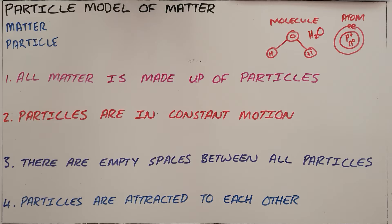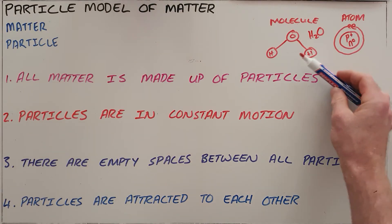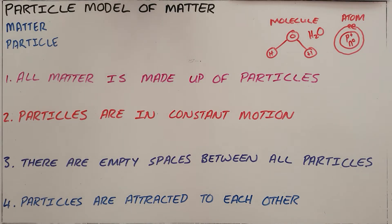So what the particle model of matter does is tell us that by looking at the way that these atoms and molecules interact with each other, we can make judgments about the properties and behavior of that matter. We say that it is a model because it only helps us to explain it, and it is based on four properties or four pillars.